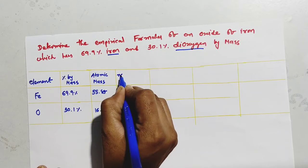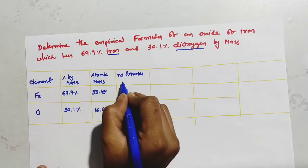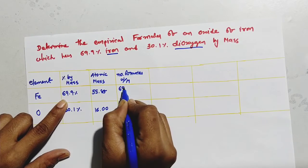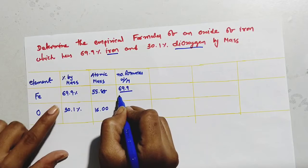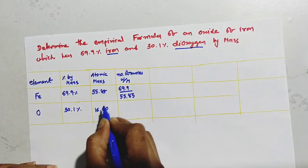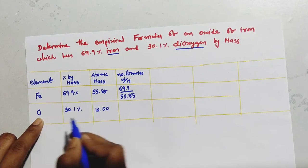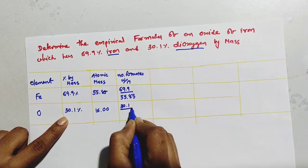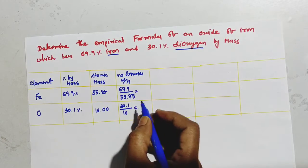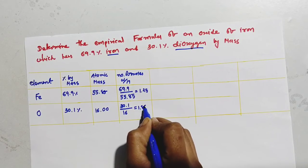Number of moles. What is a mole formula? Weight by molar mass. See, Fe weight is 69.9 divided by its molar mass, 55.85. And here, for oxygen, weight by molar mass. How many weight of oxygen? It is 30.1 divided by 16. Now, we have to calculate it. 1.25 and here, 1.88.